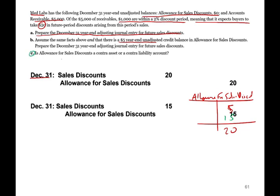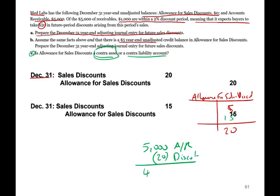Part C: Is the allowance for sales discount a contra asset or a contra liability? It's a contra asset — specifically, a contra asset to accounts receivable. We have $5,000 of receivable, and we deduct $20 from it for the expected discount. Therefore, our net receivable is $4,980, net of the discount. It's a contra receivable.